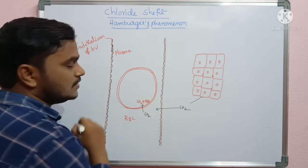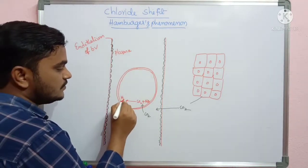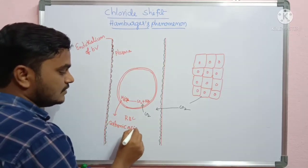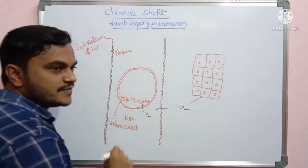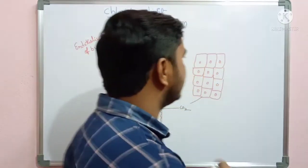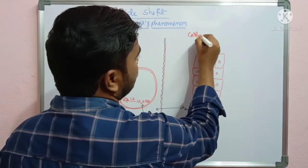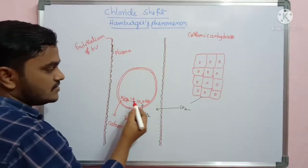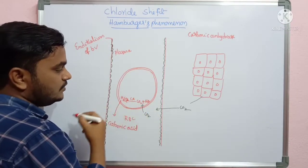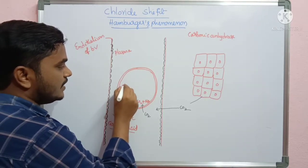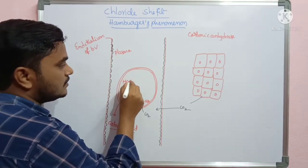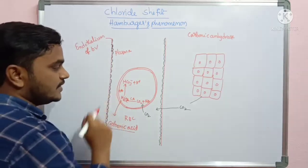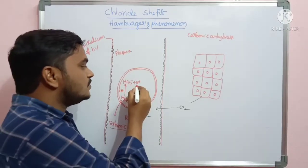In the plasma, CO2 first reacts with water. So CO2 plus H2O leads to the formation of H2CO3, which is carbonic acid. This H2CO3 is present in the RBC, where the enzyme carbonic anhydrase catalyzes this reaction. Carbonic anhydrase catalyzes: carbon dioxide mixes with water to form H2CO3, which is carbonic acid. This carbonic acid again breaks down into bicarbonate (HCO3-) plus H+ ions.